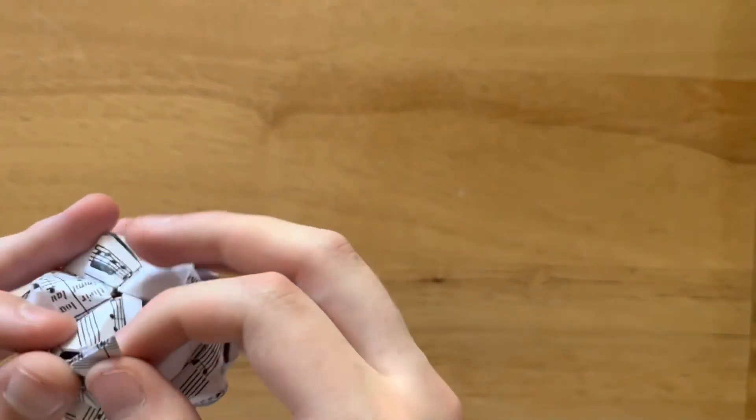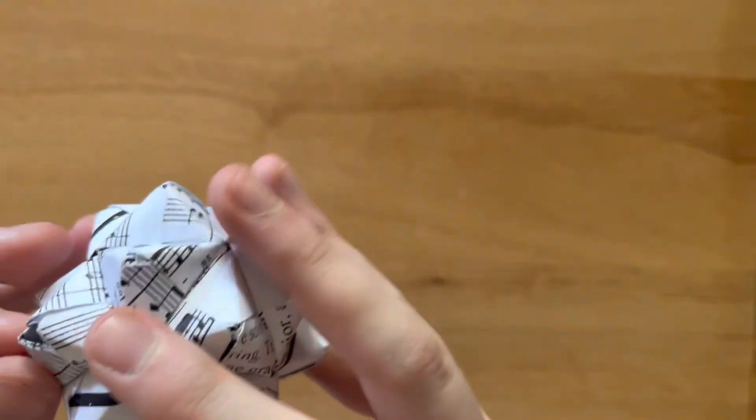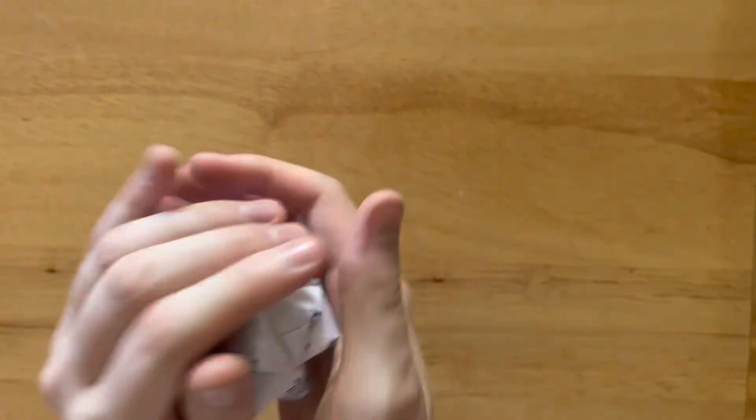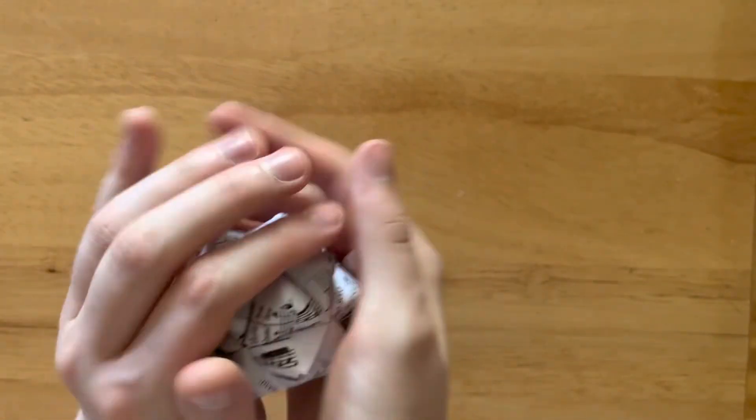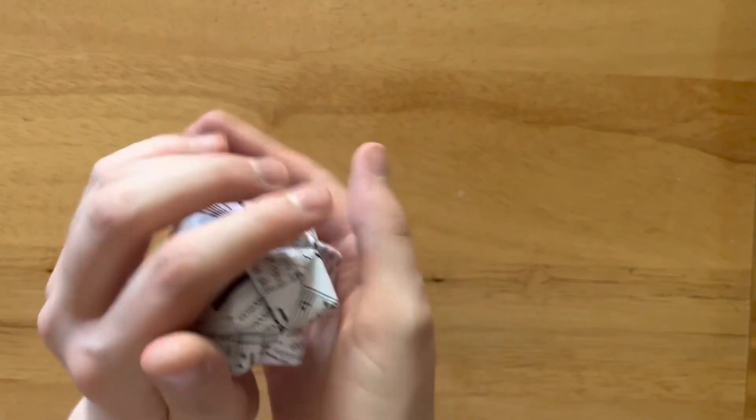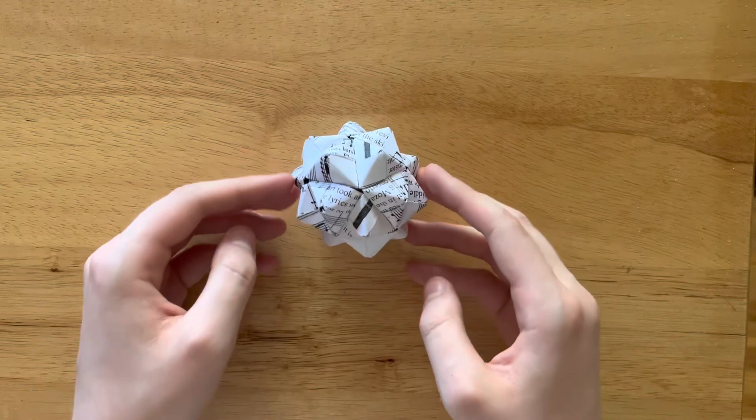And again, last piece is always the hardest, the last little flap to put in the pocket is always the most challenging, at least for me anyway. Then you can kind of mush it together so it closes up okay. And there we have it. We made a lovely stellated icosahedron.